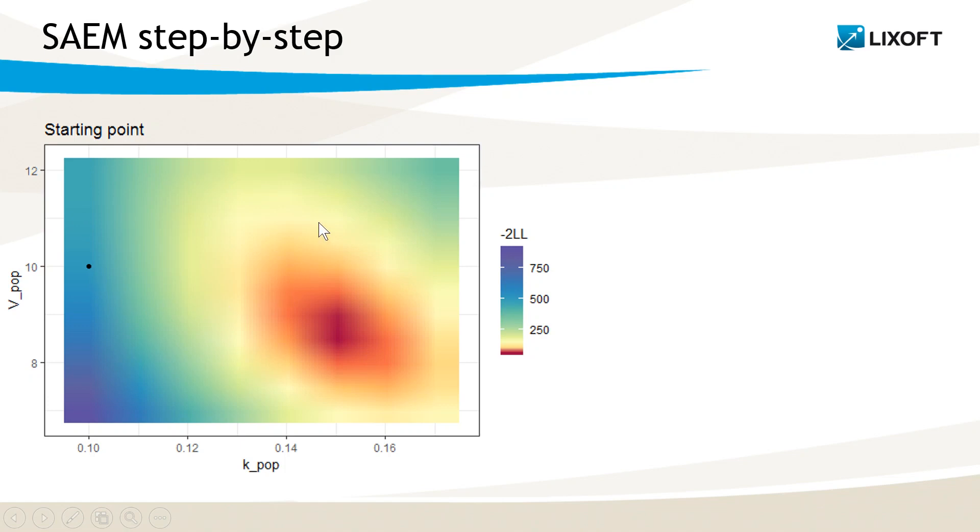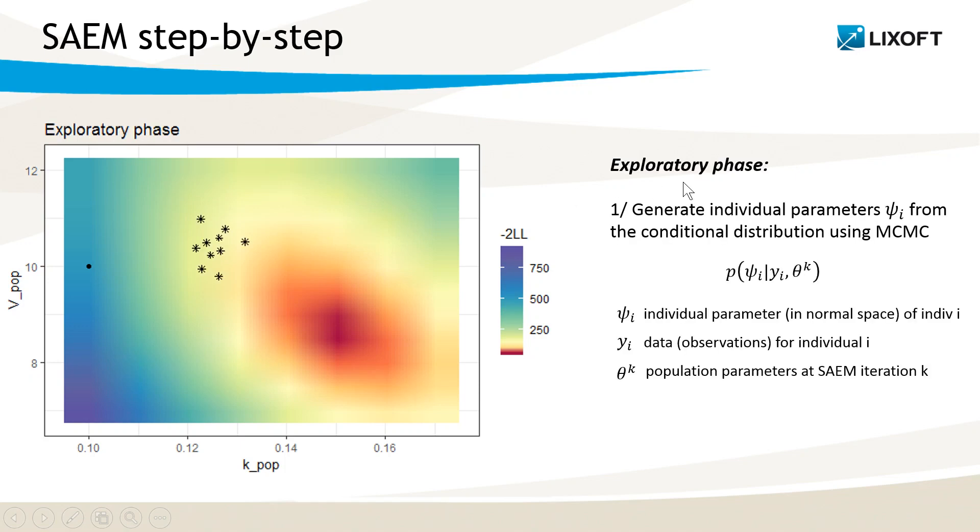And the color map represents the values of the likelihood. The SAEM algorithm does not know about those likelihood values. I have just set them as background, such as we know where the maximum likelihood is.